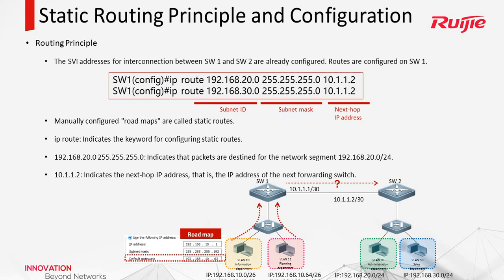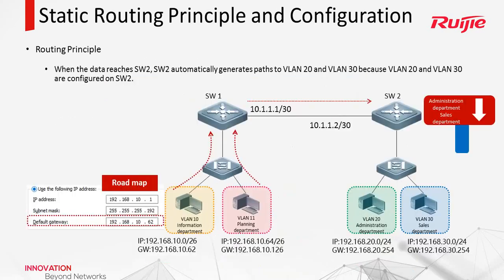Manually configured route maps are called static routes. When SW2 receives this packet and the destination is, for example, this PC in VLAN 20, SW2 can just forward directly. Because they are in one network, and the route — we call it a direct route — is automatically generated.